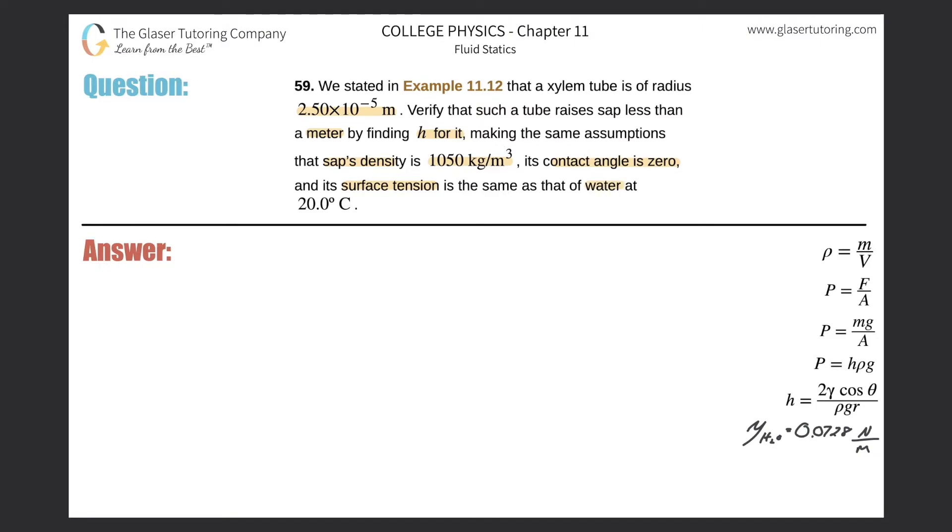All right, so they're talking about finding a height in a tube of a certain radius with given contact angle, density, and surface tension. We have a formula that relates all of these variables.